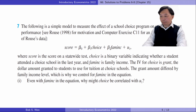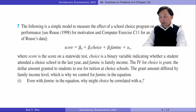Let's do problem 7. The following is a simple model to measure the effect of a school choice program on standardized test performance, where score is the score on a statewide test, choice is a binary variable indicating whether a student attended a choice school in the last year, and where income is family income. The instrument variable for choice is grant — the dollar amount granted to students to use for tuition at choice schools.